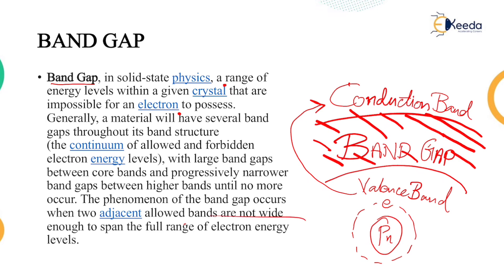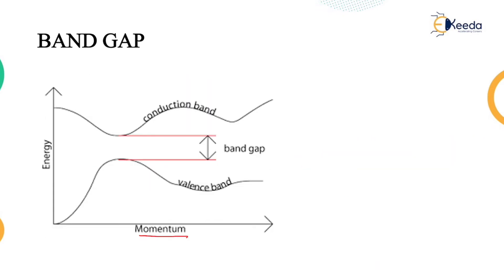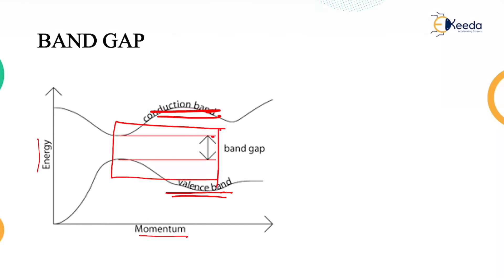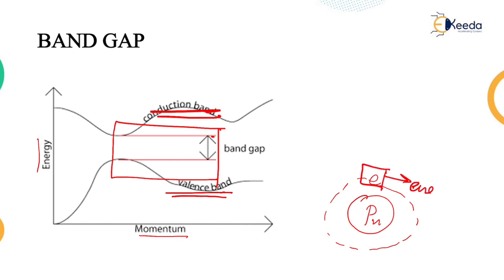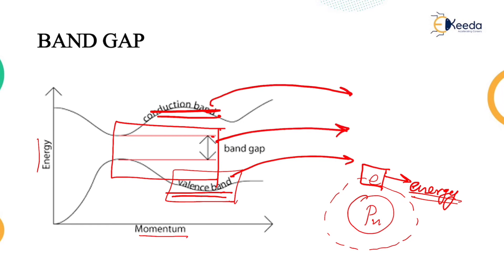With this, we learn about the different bands and the band theory of solids. We start off with a proton and a neutron, and move ahead to the electron. The main aim is to know the energy of this electron with respect to different bands: the valence band, the band gap, and finally the conduction band. Thank you so much for watching this video. Stay tuned for further videos and subscribe to eKira.